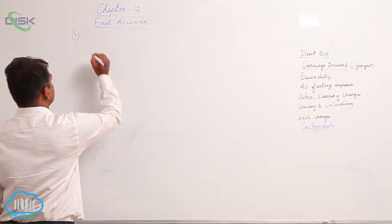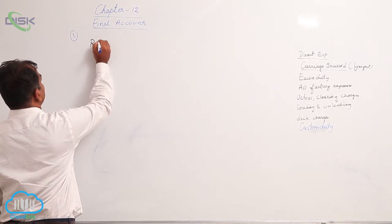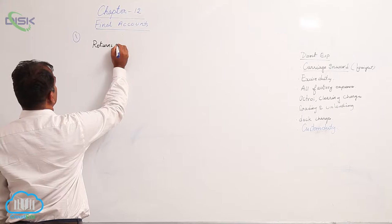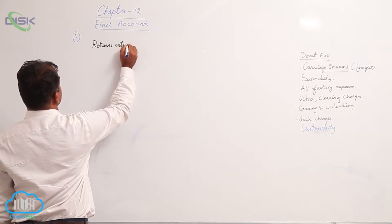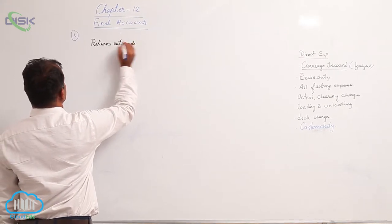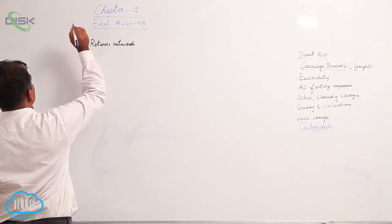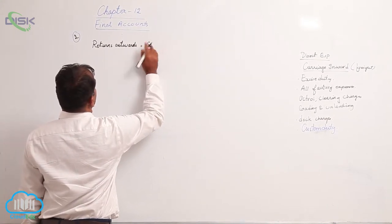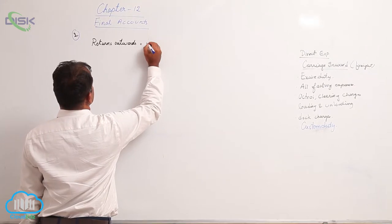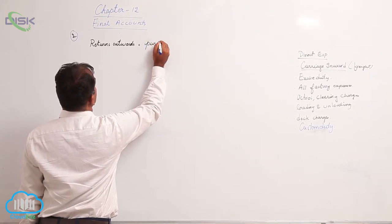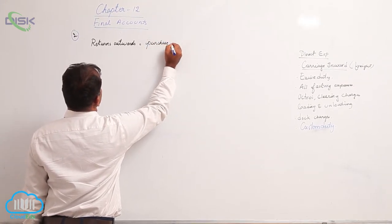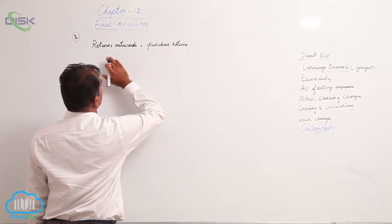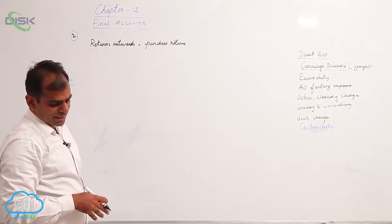In the initial chapters, you have learned written out words. Written out words is nothing but purchase returns. Return out words is nothing but purchase returns. So what you have to do — it should be written out words — you have to minus it from purchases.